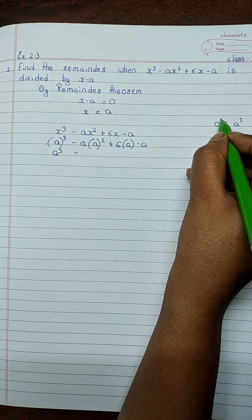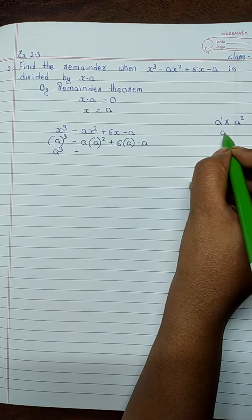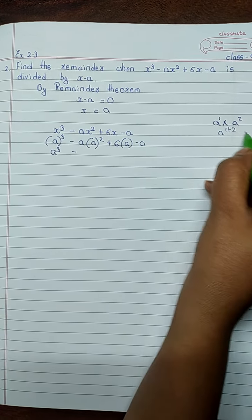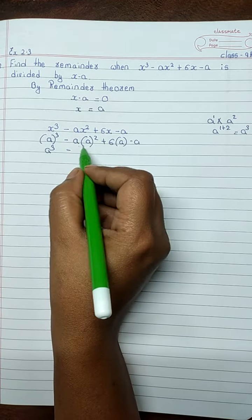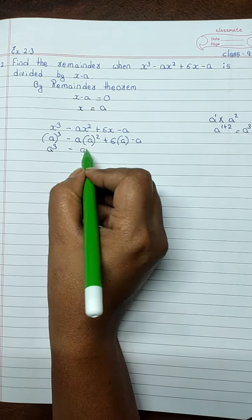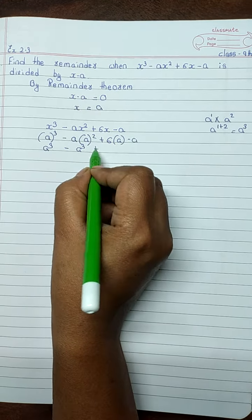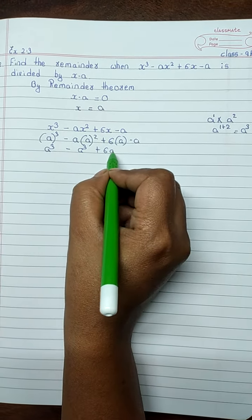Nothing is there means 1 is there. a, 1 plus 2... a cube. So, a into a square is a cube plus 6a minus a.